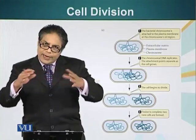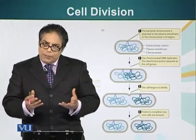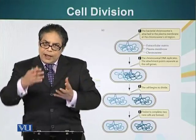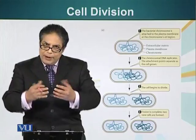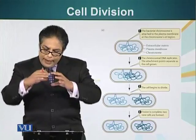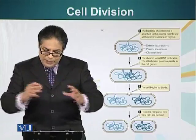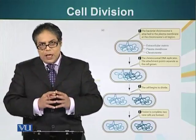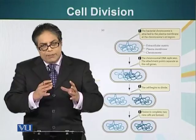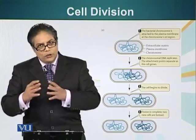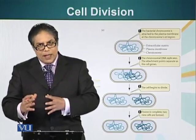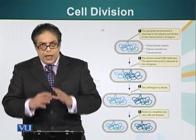Once the DNA replication is complete, a cell wall and membrane will form, which will separate the two cells. So initially we had one cell, and from one cell we have gone to two cells in this process.